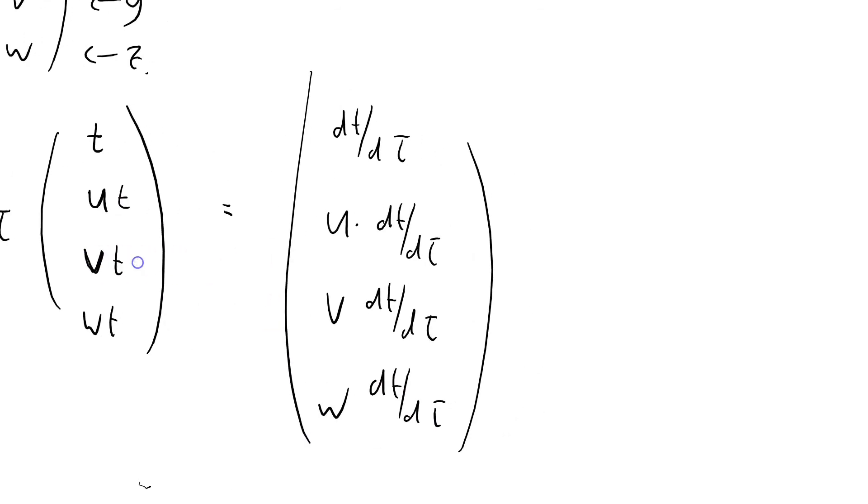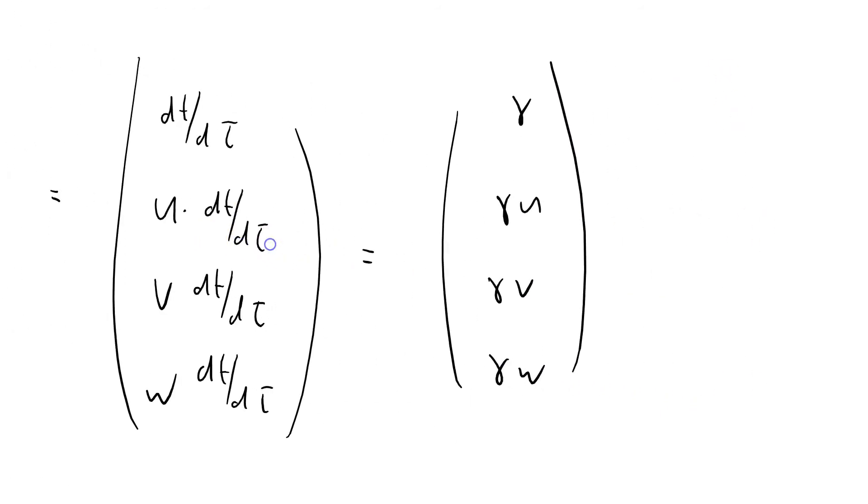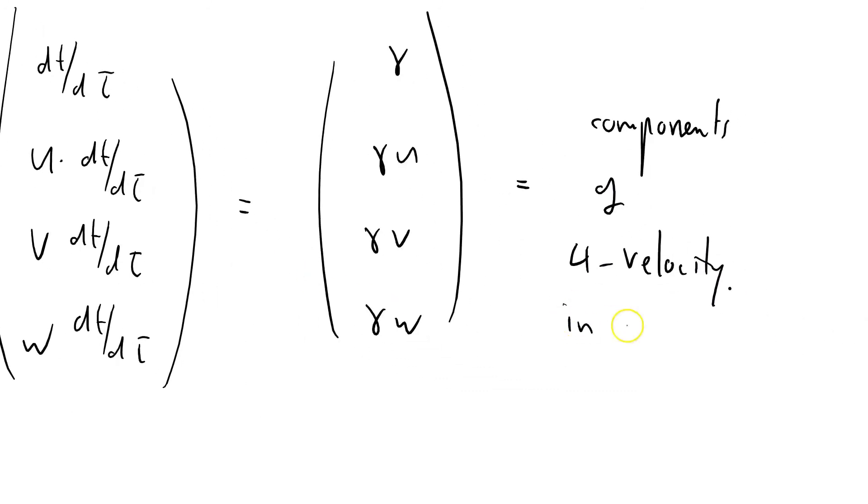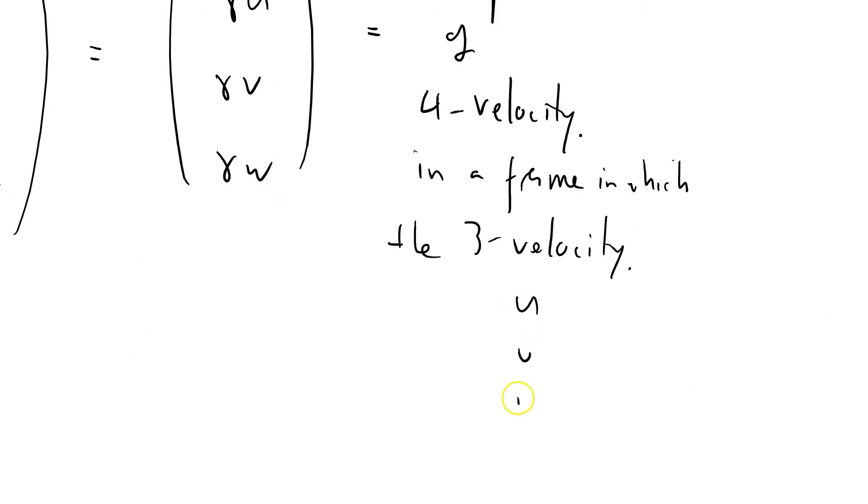And we know what that is. That's just gamma, gamma u, gamma v, gamma w. And that is the components of 4-velocity in a particular frame. In a frame in which the 3-velocity, or the velocity as you kind of usually measure it, is just u, v, w.